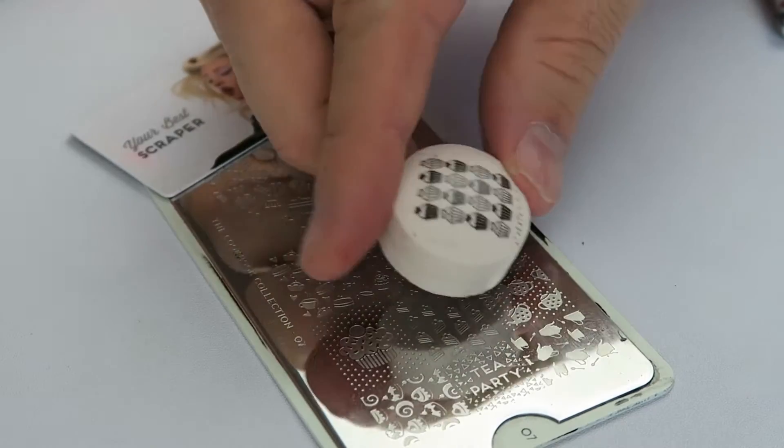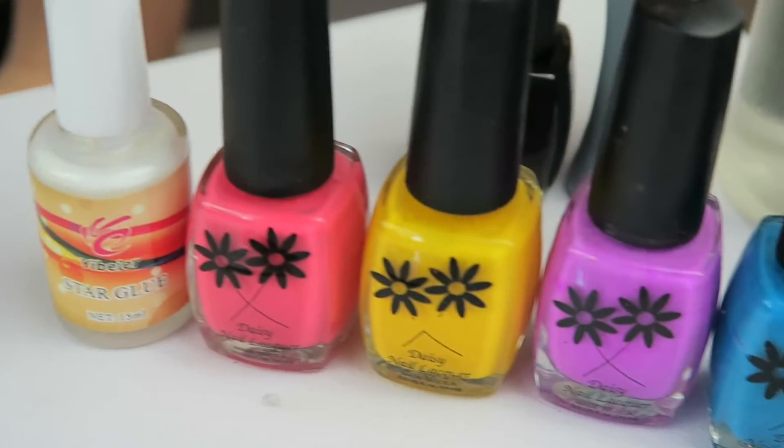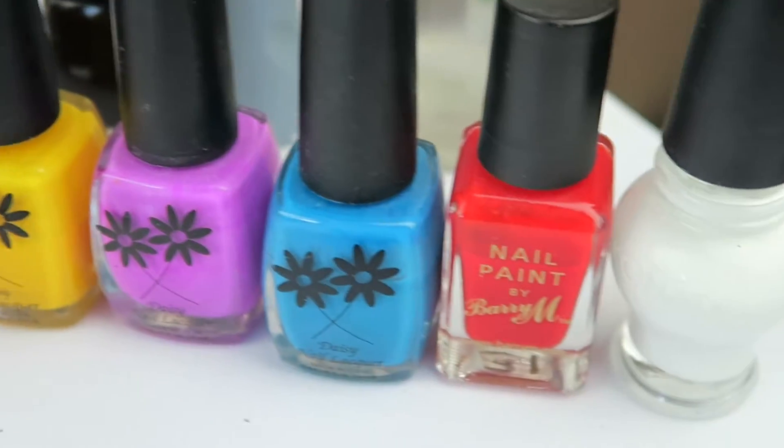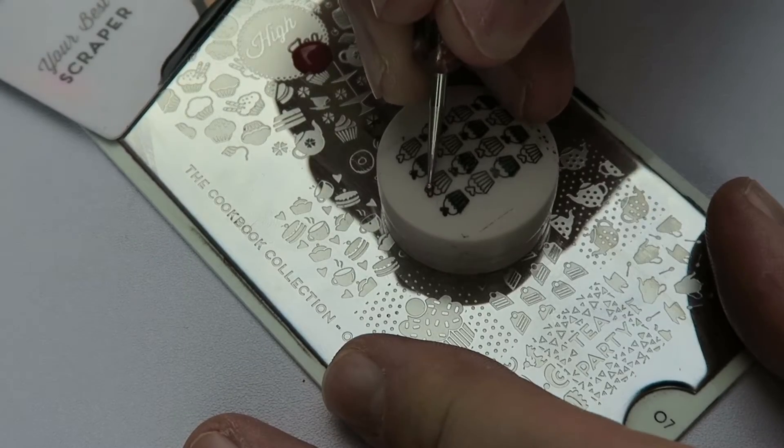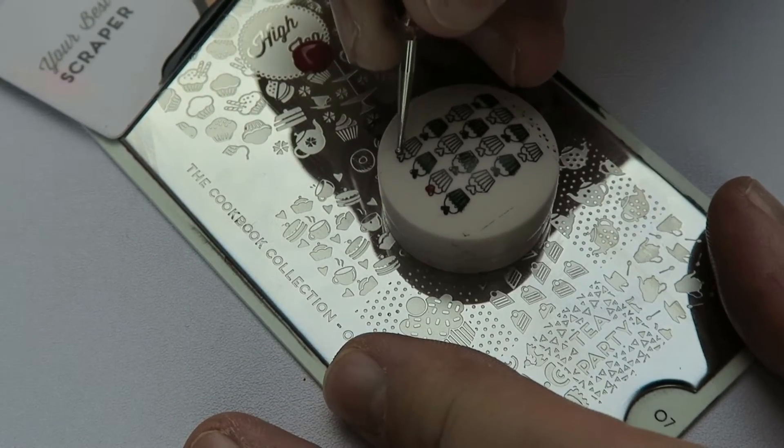Then we are going to be removing the silicone head ready for the coloring. We have chosen an array of colors for the cupcakes. Obviously you can choose whatever colors you want to use.